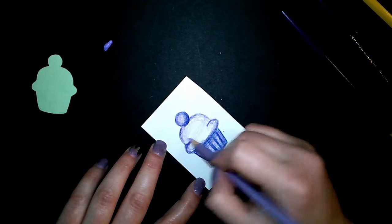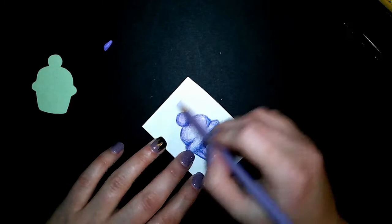You can also see another element of art in this project, value. That is what makes it look 3D. That is the shadows and the highlights that you see on here.